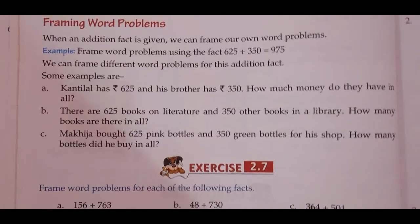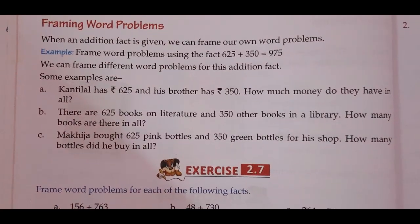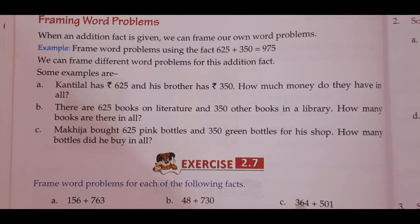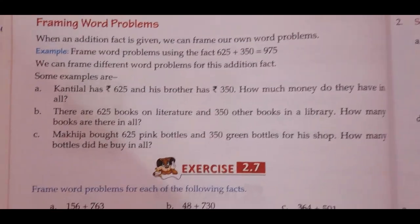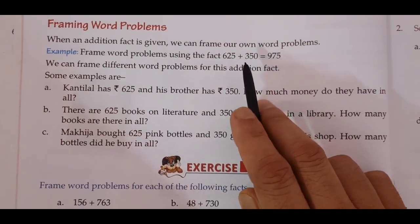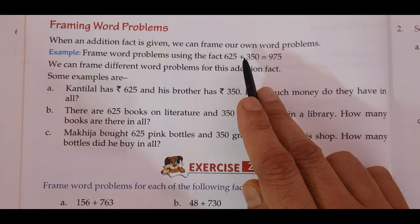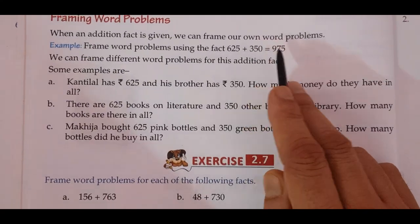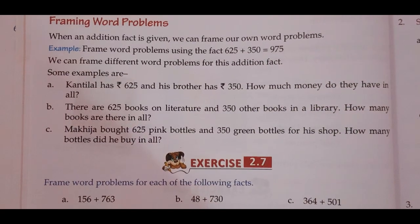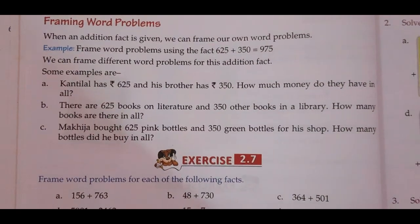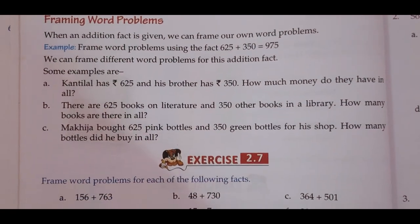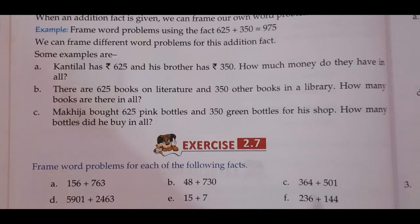The first example is: Kantilal has 625 rupees and his brother has 350 rupees — how much money do they have in all? As I have told you, in addition word problems when we are adding two or more numbers, we can say 'in all' or 'all together.' For example: how much money do they collect all together?